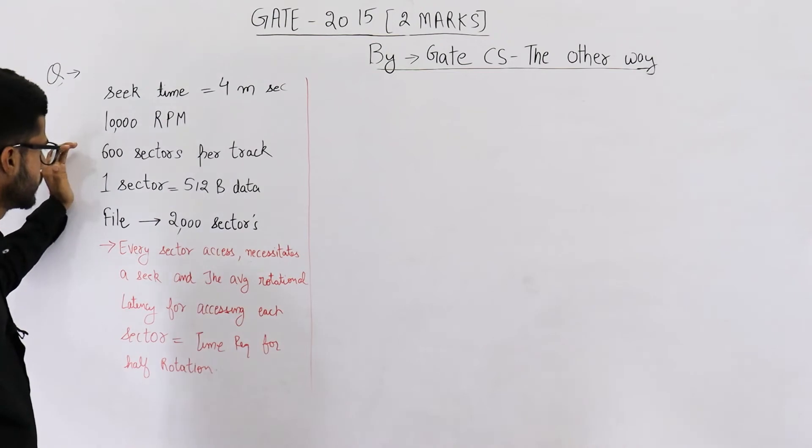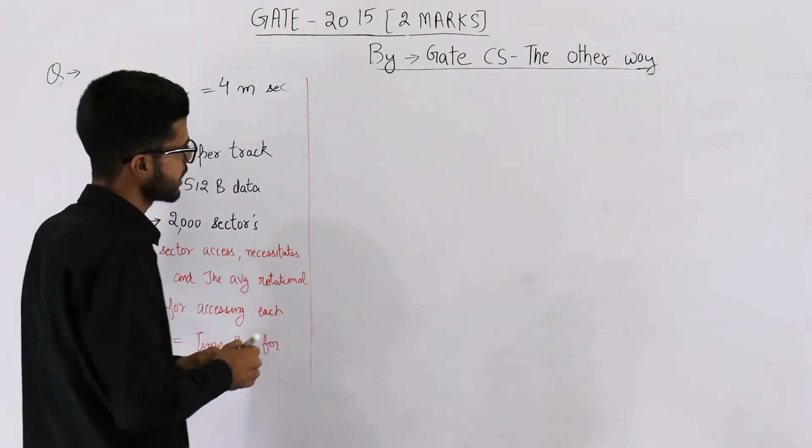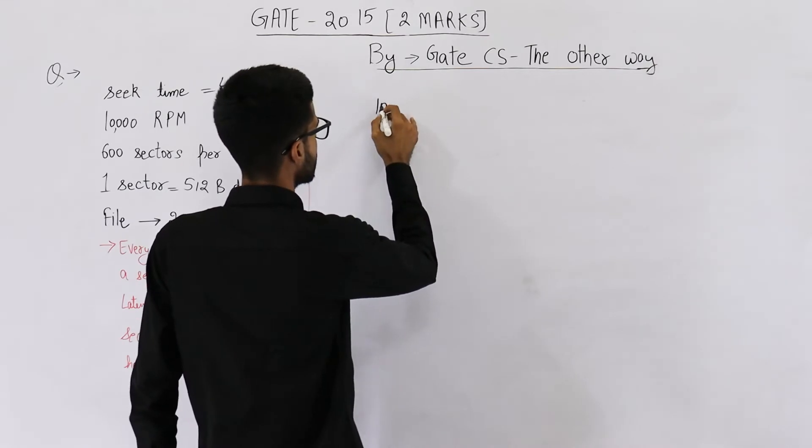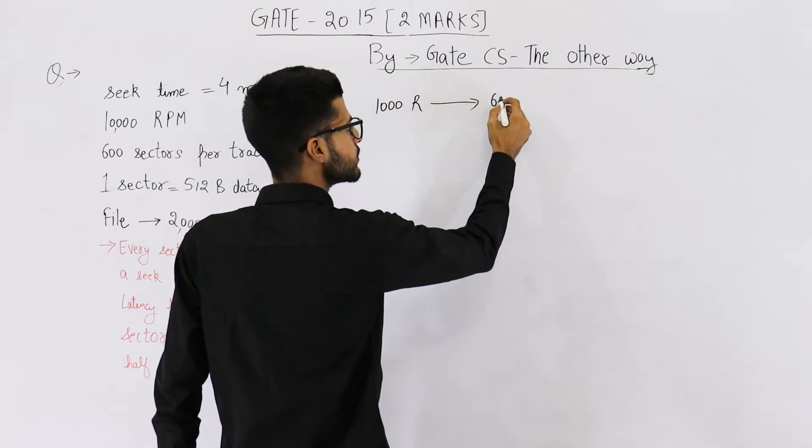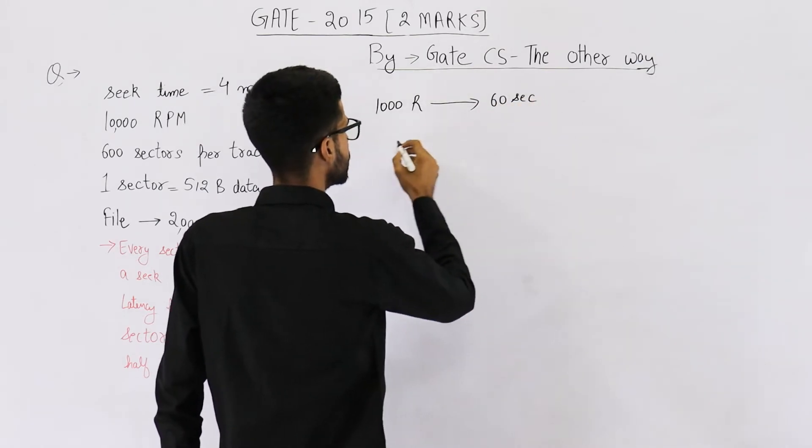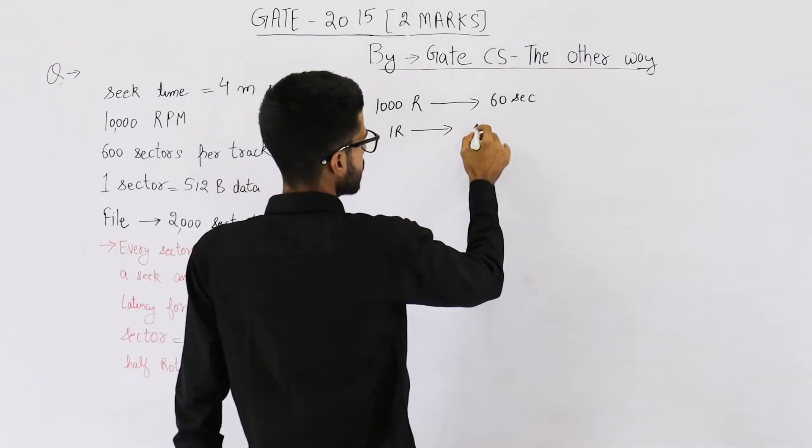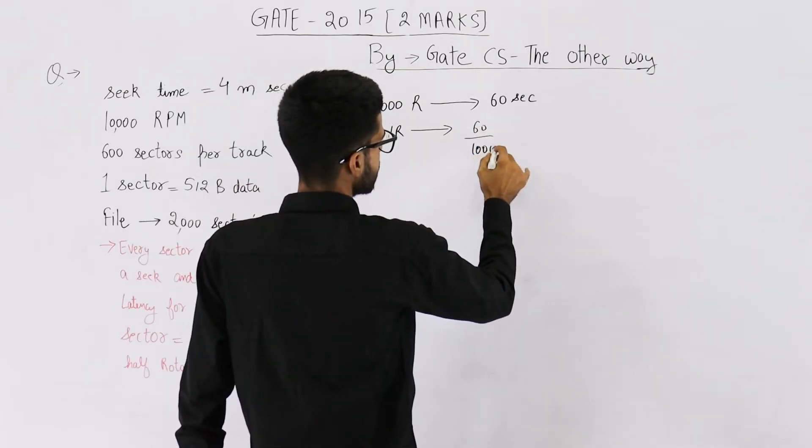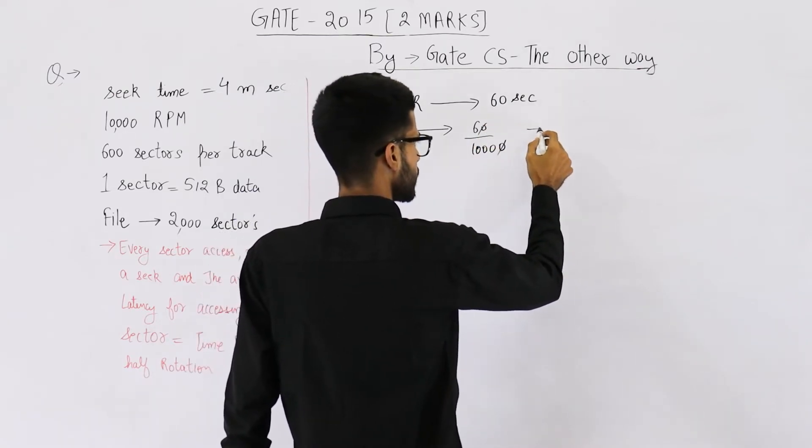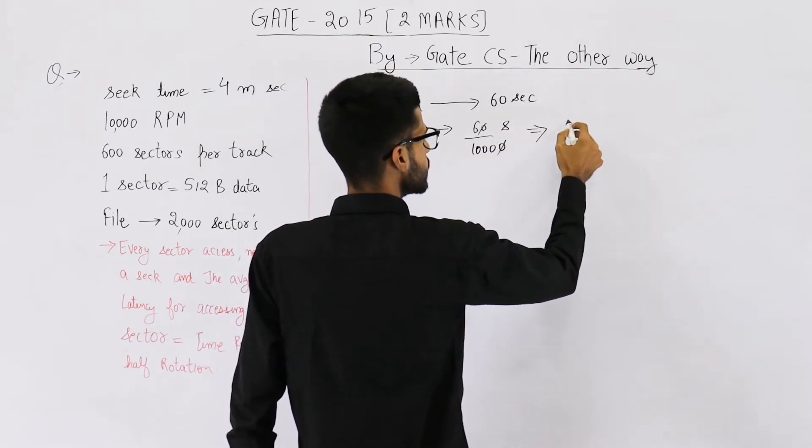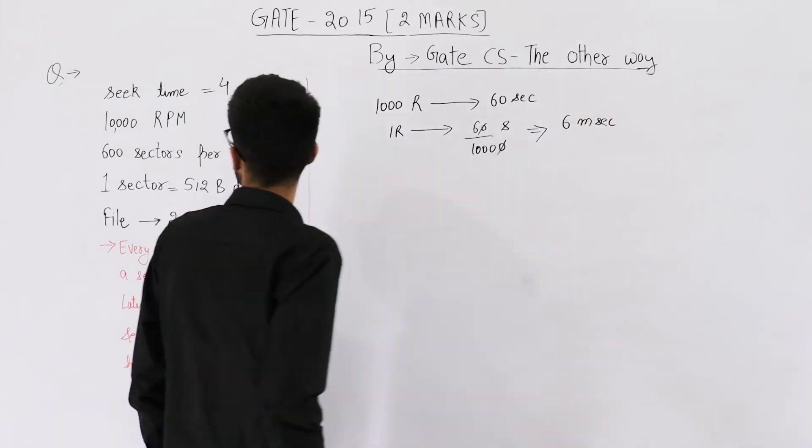Let's find out the rotational delay. The disk speed is 10,000 RPM. 10,000 rotations take one minute, which is 60 seconds. So one rotation will take 60 by 10,000 seconds. This comes out to be 6 by 1000, that is 6 milliseconds.